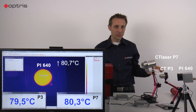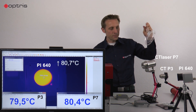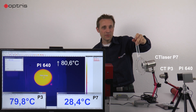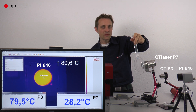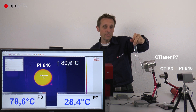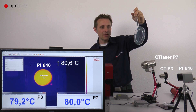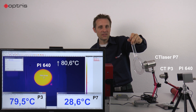Now let's have a look at our P7 sensor which has a wavelength of 7.9 microns. You can see that FEP material is not transmissive at a wavelength of 7.9 microns. The temperature decreases to 28 degrees C — that is exactly the temperature of my plastic foil. So without the foil I have 80 degrees C looking at the black body, and if I put the foil material in front of the sensor I have 28 degrees C.